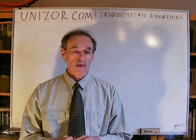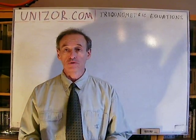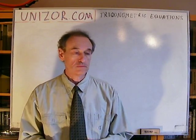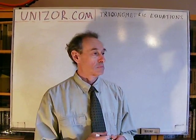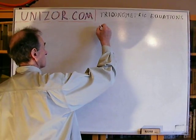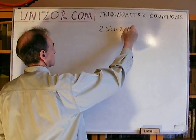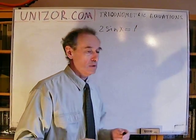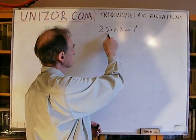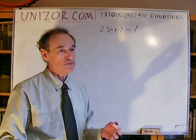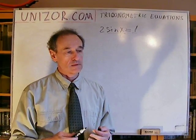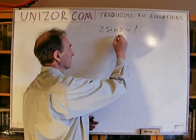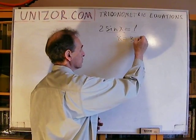Probably you can say that any equation where one of the components is a trigonometric function is a trigonometric equation. There are some simple ones like, for instance, 2 sine of x equals to 1. One obvious solution: sine of x is equal to 1/2. We remember that the sine of 30 degrees is 1/2, so probably x equals to 30 degrees.